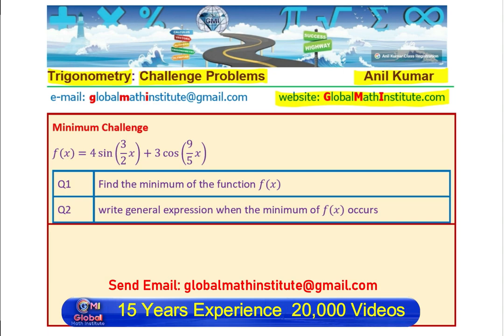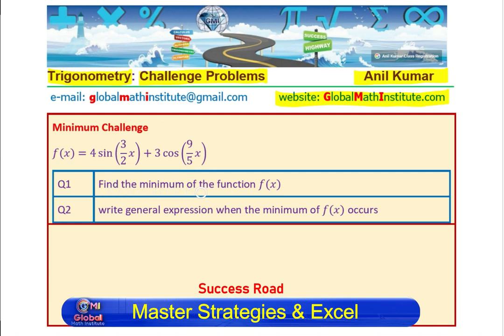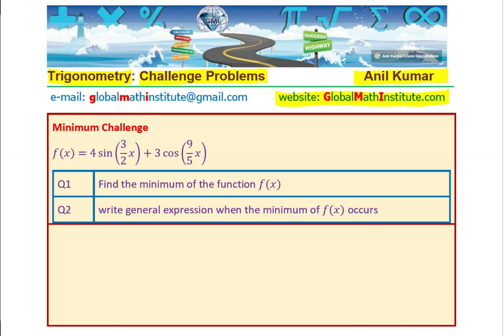The question here is, f of x is equal to 4 times sine 3 by 2x plus 3 cos 9 by 5x. Find the minimum of the function f of x. Write the general expression when the minimum of f of x occurs.